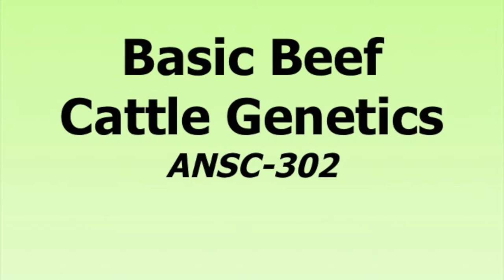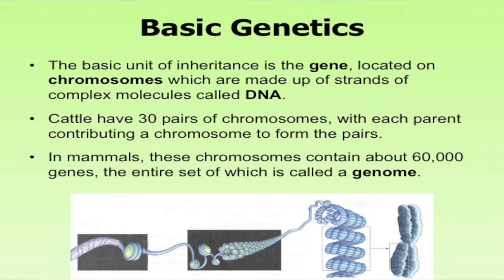Today we're going to talk about some basic beef cattle genetics, and then we'll follow it up with a discussion on crossbreeding and breeding systems in the next lecture. We're not going to make you molecular geneticists or animal breeders by taking this class, but we want to give you some basic inheritance concepts so you can think about how we select breeds, color patterns, and how animals inherit traits — for example, when we breed a Hereford to a Red Angus, how do we end up with a red Baldy? So the basic unit of inheritance is the gene.